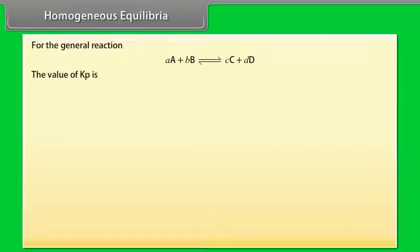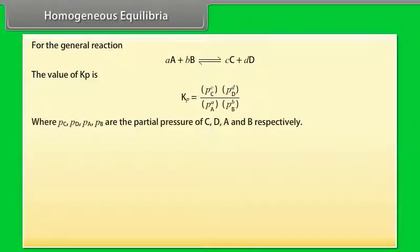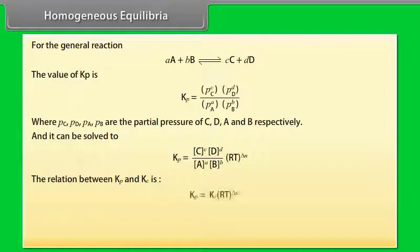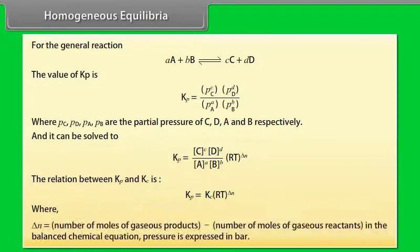The value of KP is expressed in terms of partial pressures PC, PD, PA, and PB of products C, D and reactants A, B respectively. The relation between KP and KC is: KP = KC × (RT)^ΔN, where ΔN equals the number of moles of gaseous products minus the number of moles of gaseous reactants in the balanced chemical equation, and pressure is expressed in bar.